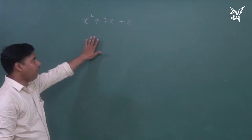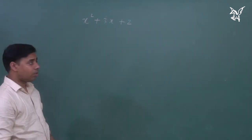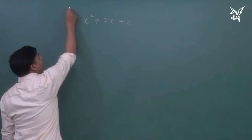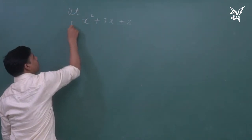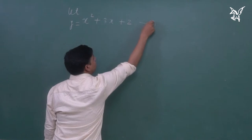You have given this question, you have to take double derivative. How do you take double derivative? First, let's assume that y equals to x squared plus 3x plus 2.